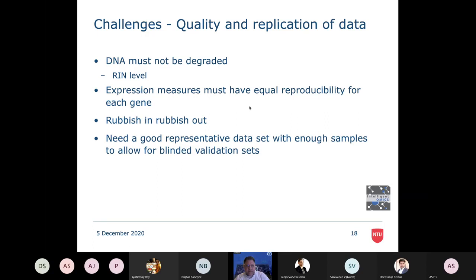The other challenge is that if we put rubbish in to our model, we get rubbish out. We will not get sensible results if we don't put good quality data in. And another challenge is we need a good representative data set. Because all of these individuals are varying, we need enough samples to allow for a good quality, robust analysis and being able to validate on unseen cases.